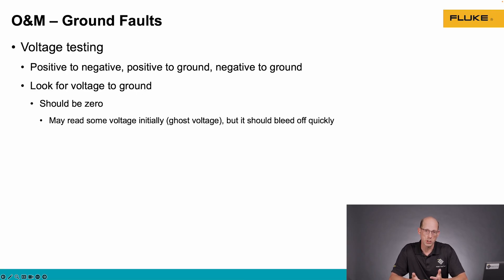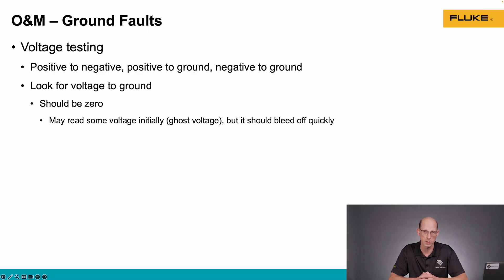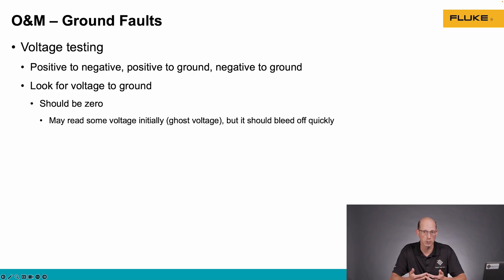We can use voltage testing to identify the location of a ground fault in a string of solar modules. When we test between the positive and the negative of a string of solar modules, we should get the open circuit voltage of the entire string, which is the open circuit voltage of an individual module multiplied by the number of modules in series. In a modern inverter where there's no reference between the positive or negative of the DC array and ground when the inverter is off, if I measure between the positive and ground or the negative to ground when it's operating properly, there should be zero volts to ground. We may see ghost voltage where there's an initial voltage, but that should bleed off pretty quickly.